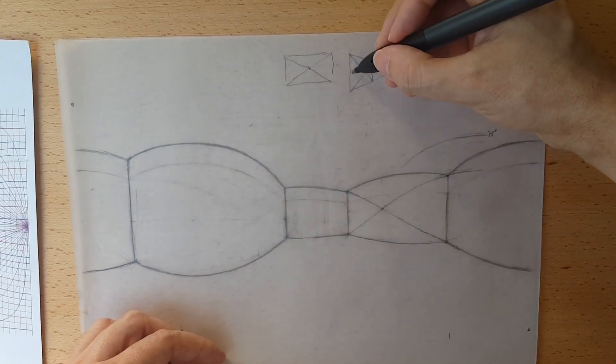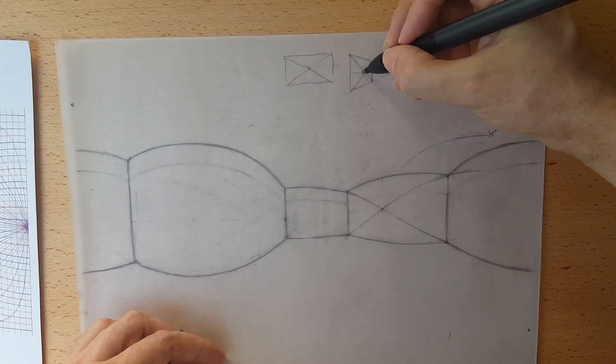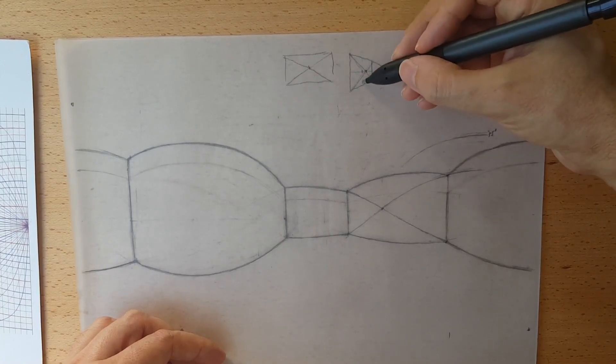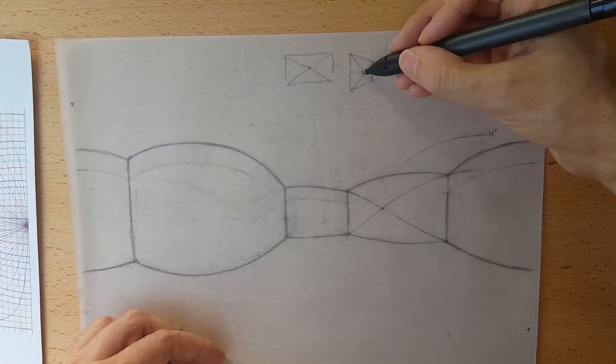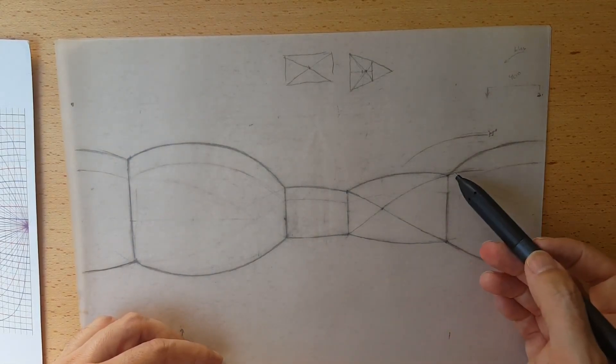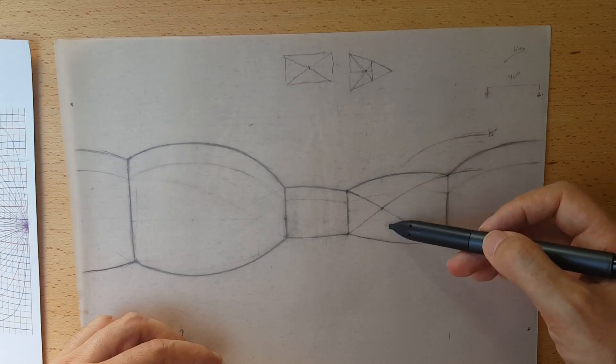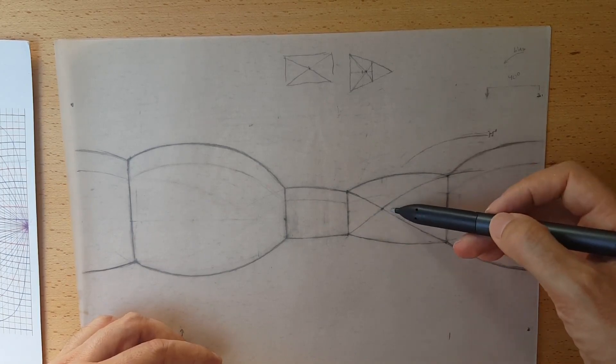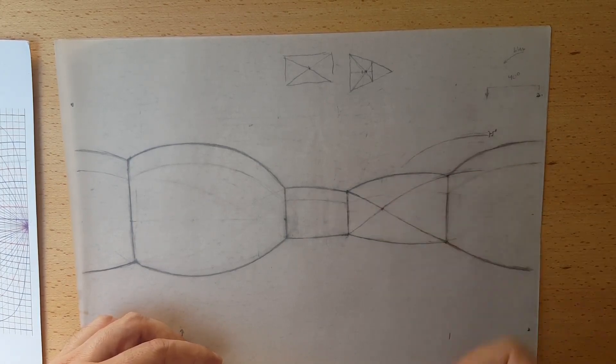As you see, of course, the middle point in perspective is not at the middle, is not halfway through here. It's a bit closer to the vanishing point. And the same happens here. The middle point is not at the metrical middle here. It's a bit further towards the vanishing point.